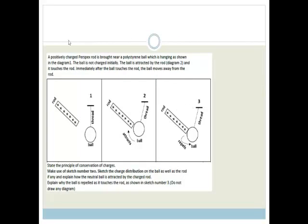It says, a positively charged perspex rod is brought near a polystyrene ball. So here's your polystyrene ball and there is your positively charged perspex rod. The ball is not initially charged. Initially, it is neutral. The ball is attracted to the rod, and then it touches the rod and immediately after it touches it, it repels.